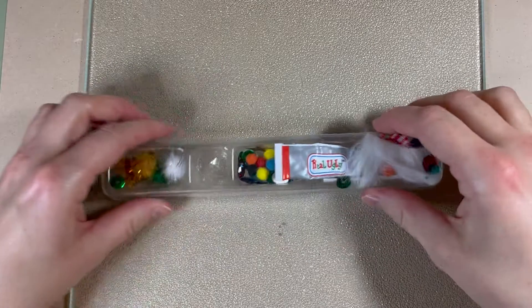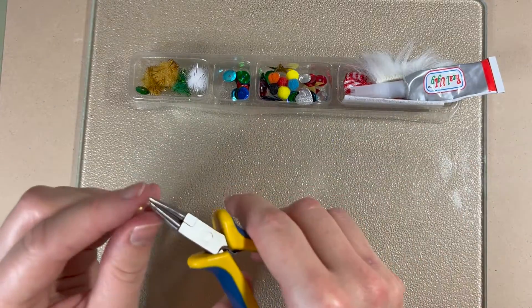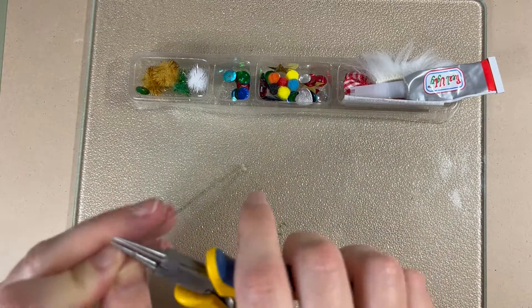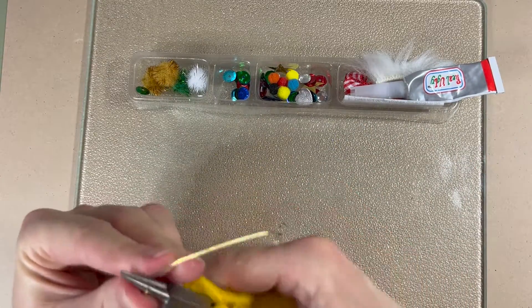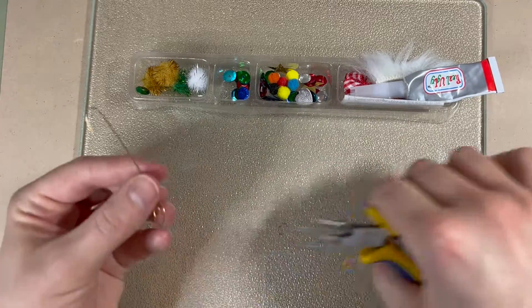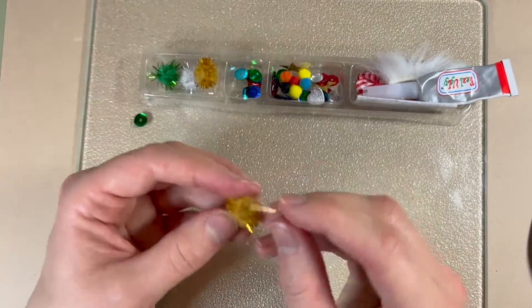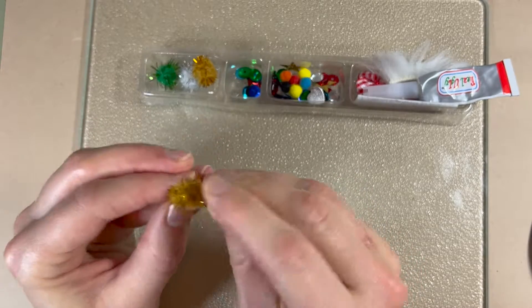Hook design number four, pom pom and curls. For these next two designs I just used some leftover bits and pieces from a design your own ugly Christmas sweater kit. To begin for this hook you want to start off by at one end creating a swirl like we discussed in design number two.